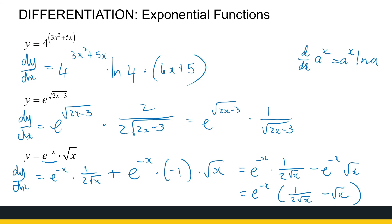Just want to make sure you can use these two definitions of derivatives for exponential functions together with the chain rule and the product rule. We didn't look at a quotient rule example, but they all come together in the end. So that is the differentiation of exponential functions. Thank you very much.